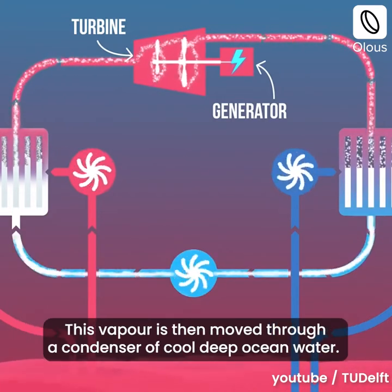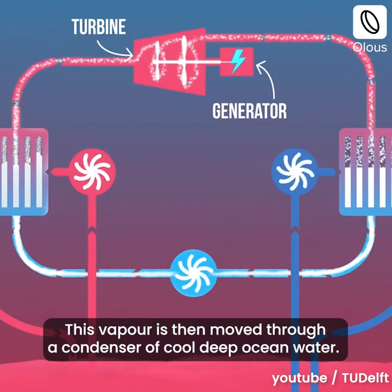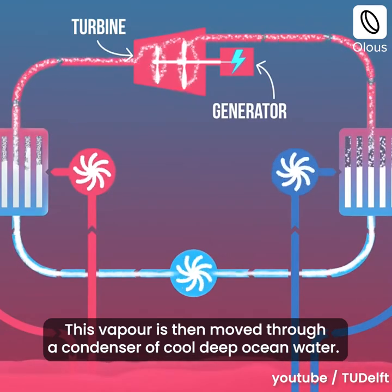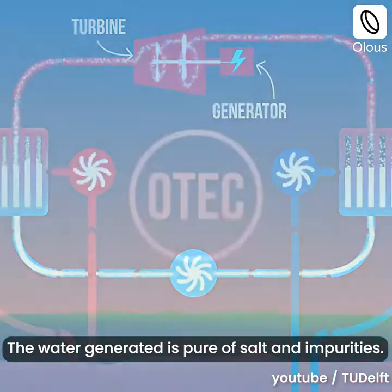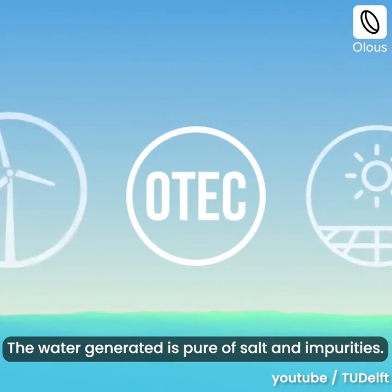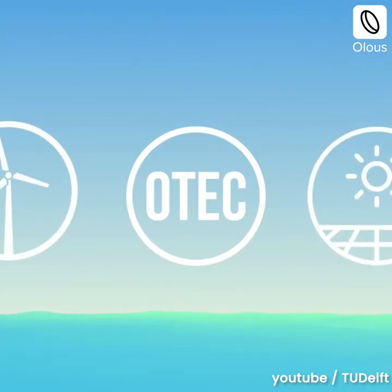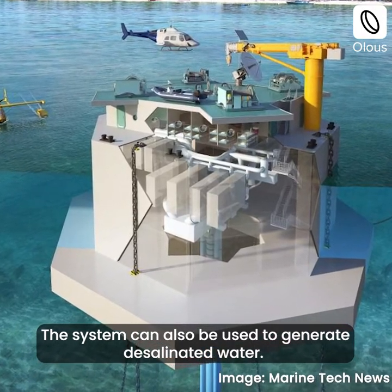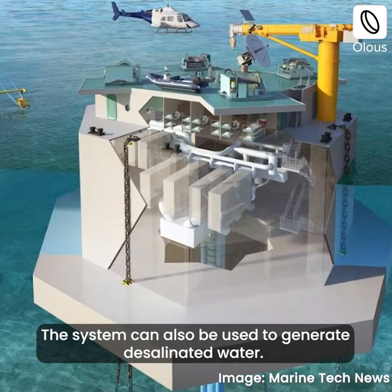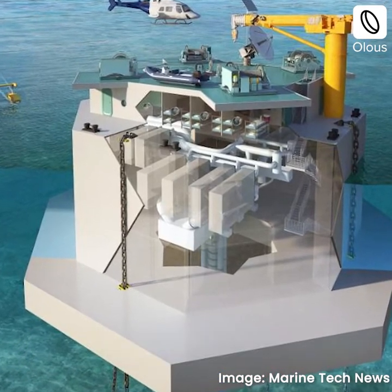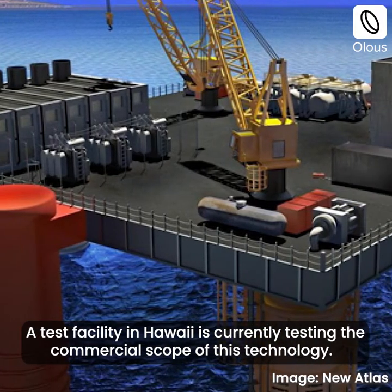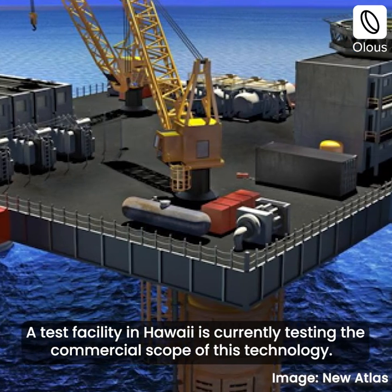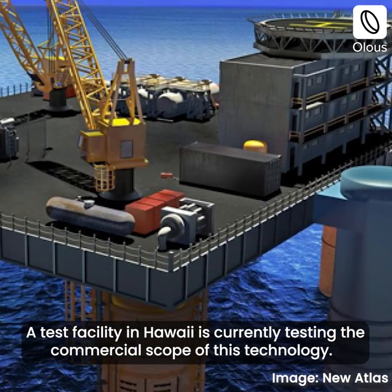This vapor is then moved through a condenser of cool deep ocean water. The water generated is pure of salt and impurities, and the system can also be used to generate desalinated water. A test facility in Hawaii is currently testing the commercial scope of this technology.